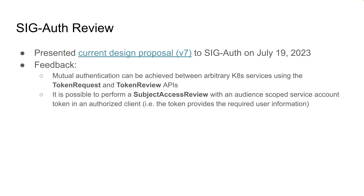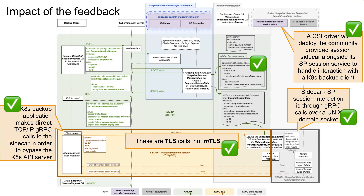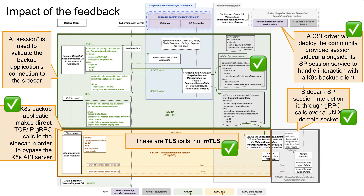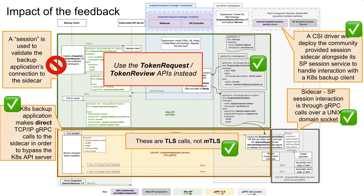To illustrate: they had no problems with all these parts of our proposal — the sidecar which hides the store, the SP and sidecar talking via Unix socket, the application using direct gRPC, and the fact that they are TLS and not mTLS. But when we came to the session construct we had to solve the end part of the TLS issue, they said don't do this — use token request and token review APIs.